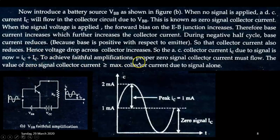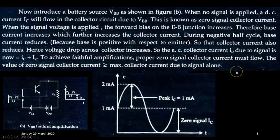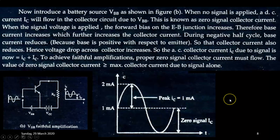So to achieve faithful amplification, proper zero signal collector current must flow. The value of zero signal collector current should be greater than or equal to the maximum collector current due to the signal alone. This situation is indicated in the diagram.